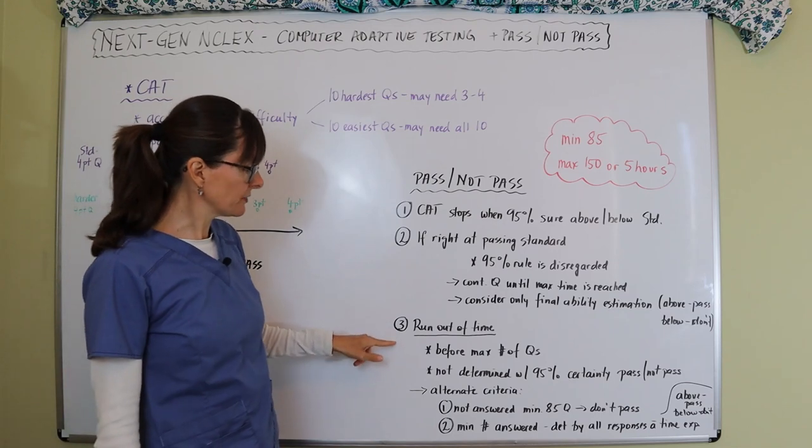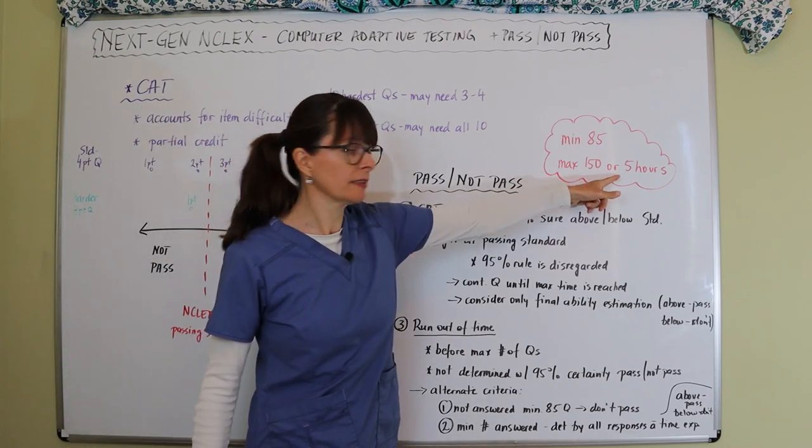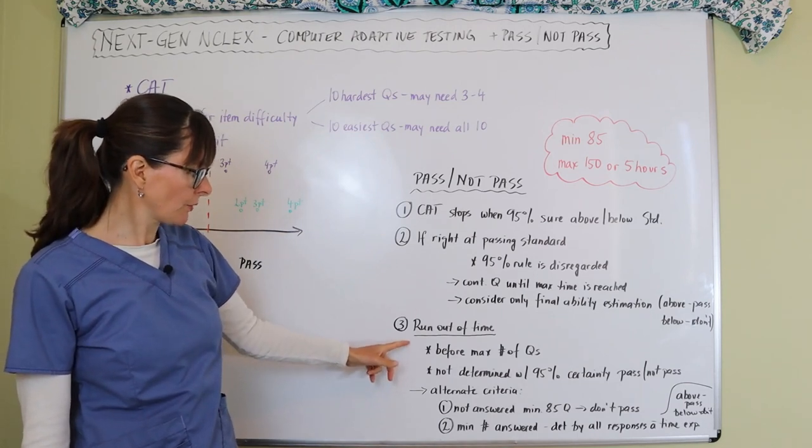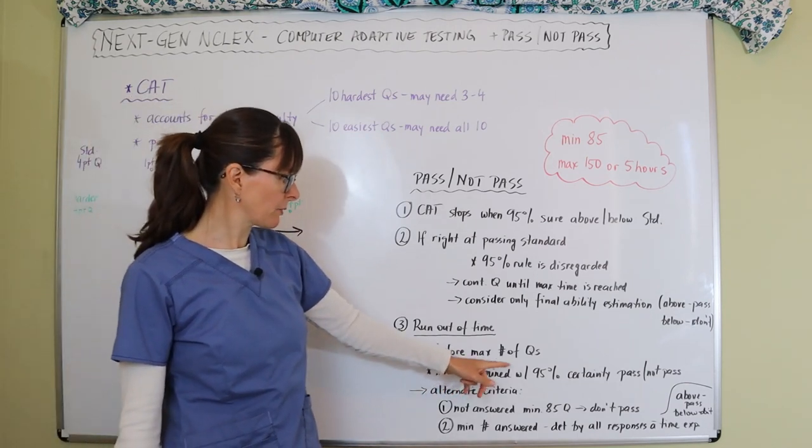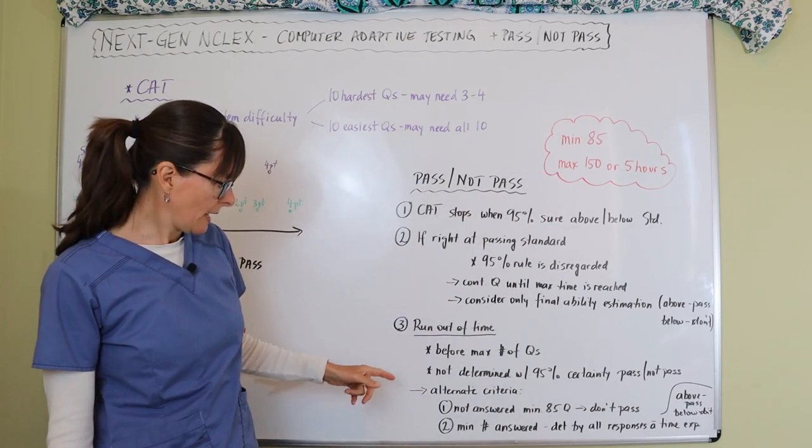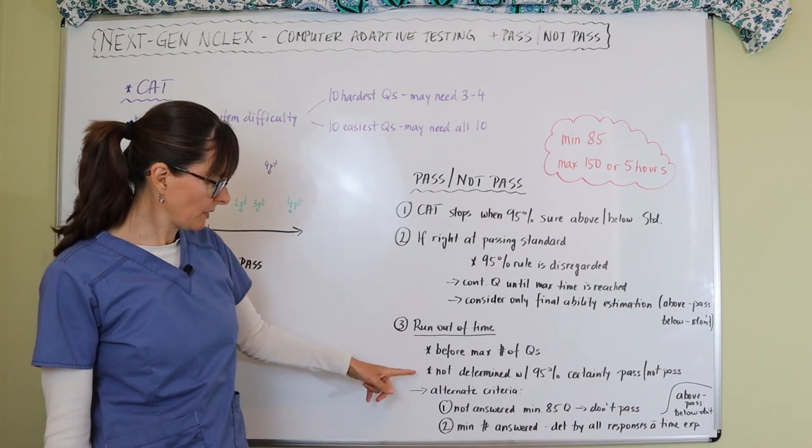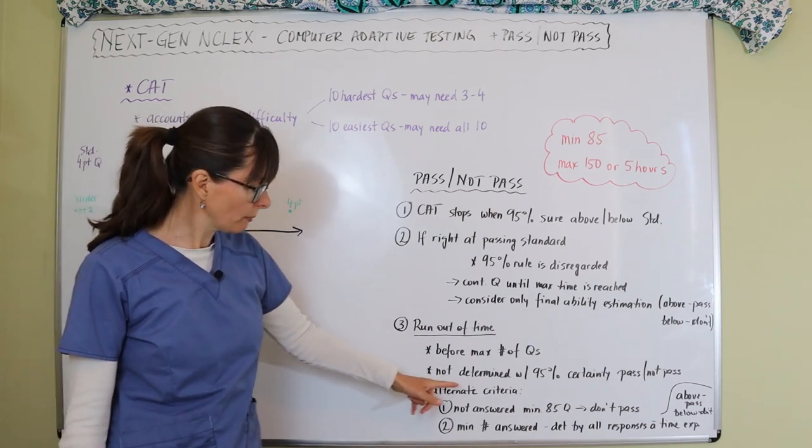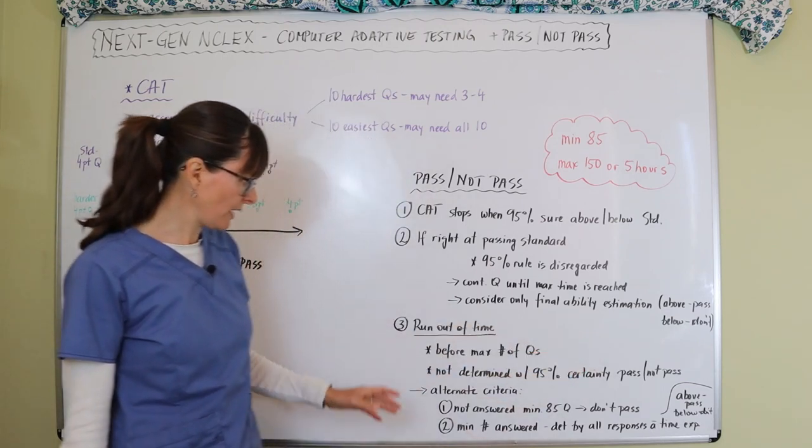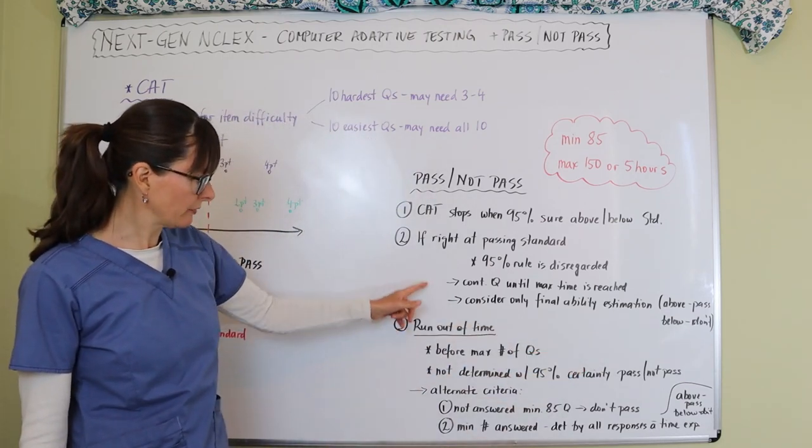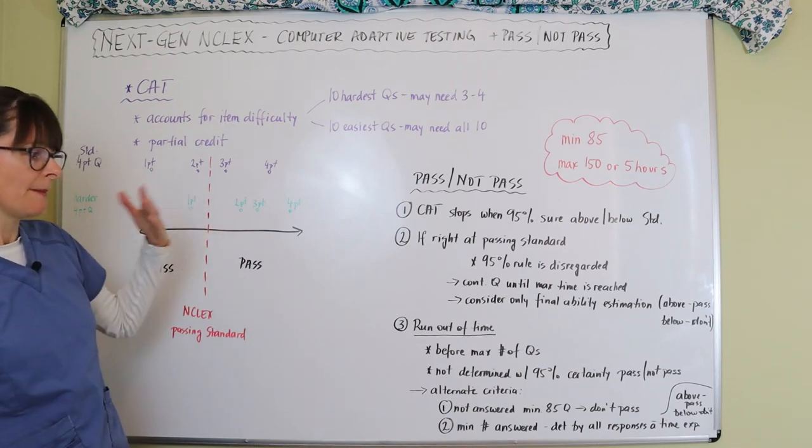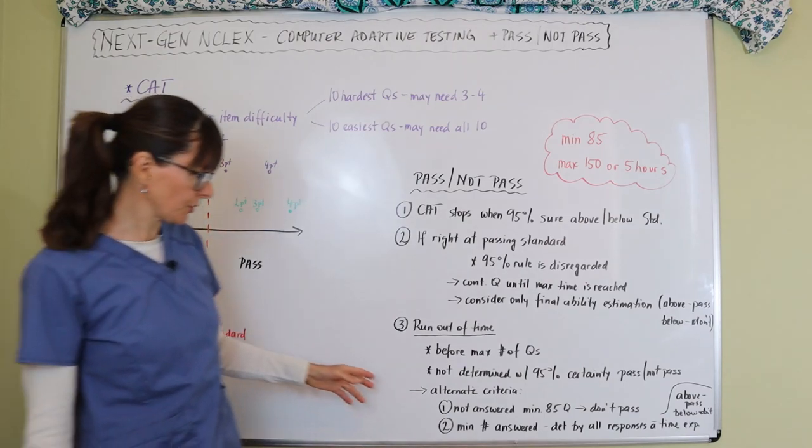If you run out of time—meaning you meet that five-hour maximum before the maximum number of questions is reached—that's one possibility. If it's not determined with 95% certainty whether you're passing or failing, you could run out of time. If you're teetering and they're still not sure when you hit the five-hour mark, they'll use this alternate criteria.